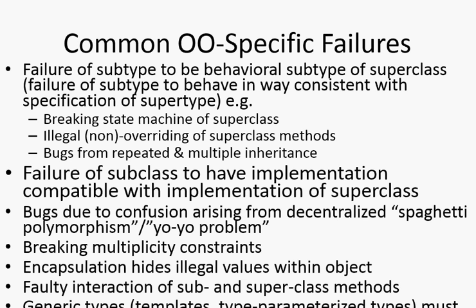Encapsulation can hide illegal values that you can't see. Generic types need to be tested with the different types with which they're instantiated throughout your program — you instantiate this generic type with this class and that class as type parameters, and you want to test it with those.